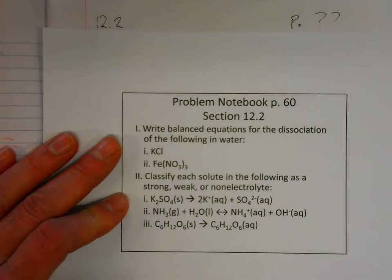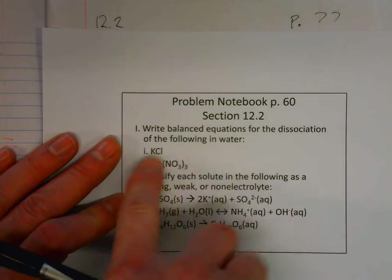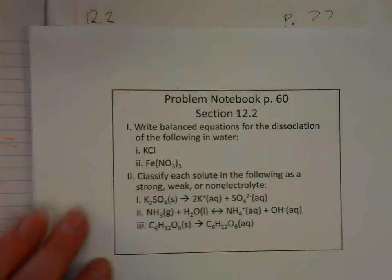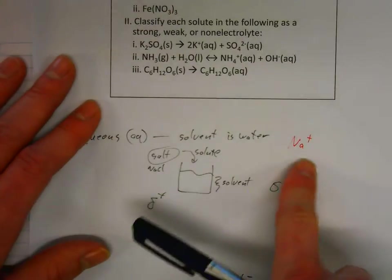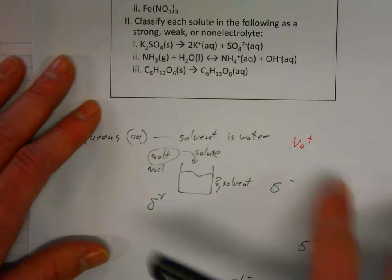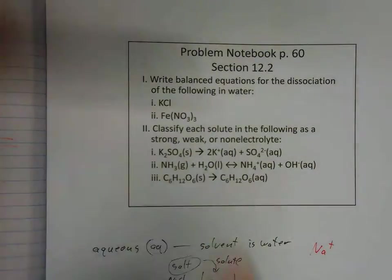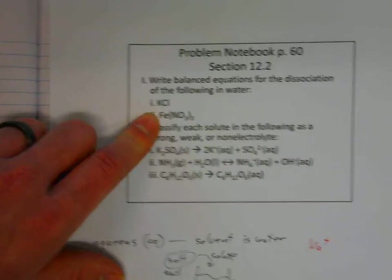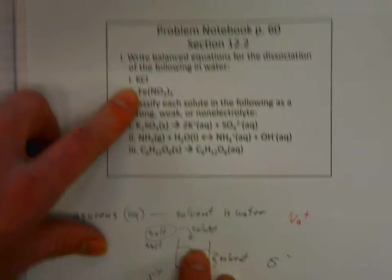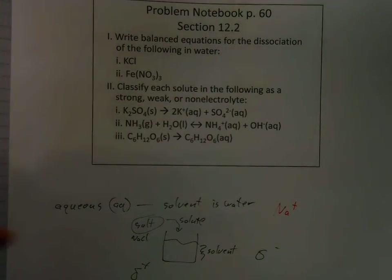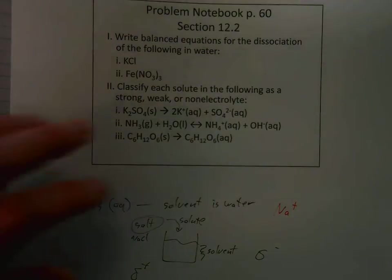Let's look at how we can write balanced equations to show dissociation — when things dissolve in water. Dissociation is the idea where something breaks into its ions, for instance into positive sodium and negative chlorine.